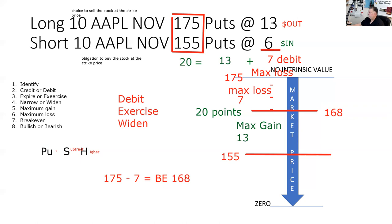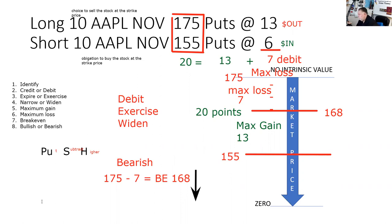Bullish or bearish — we need to know where we want the stock to go in relationship to the breakeven. The larger premium dominates. So this is going to be a bearish spread because the dominant leg is a long put, and long puts are bearish. It'll always be the higher strike put, because the higher strike put always has the greater premium.